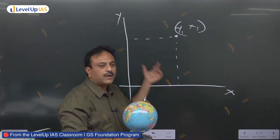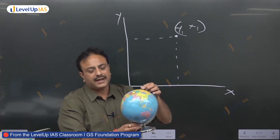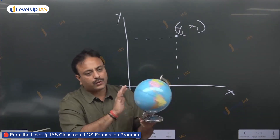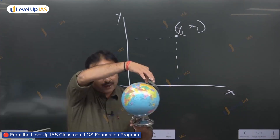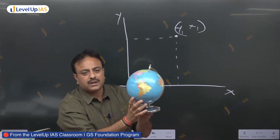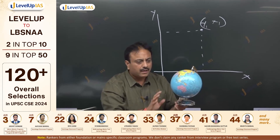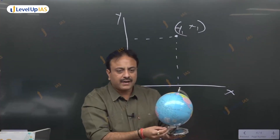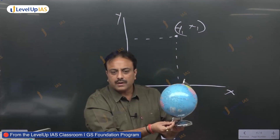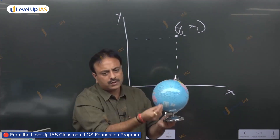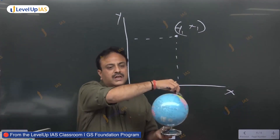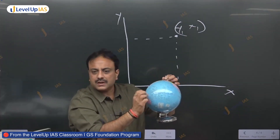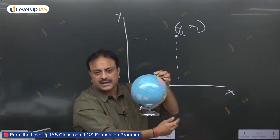When the problem of latitudes and longitudes had to be solved, what geographers and scientists initially knew was the North Pole and the South Pole — the two points about which Earth's rotation takes place. When we know two points, we can imagine a straight line joining the North Pole to the South Pole. Once you know the starting and ending point, the midpoint of that line can be calculated. On that midpoint, a horizontal circle was imagined and named as the equator.